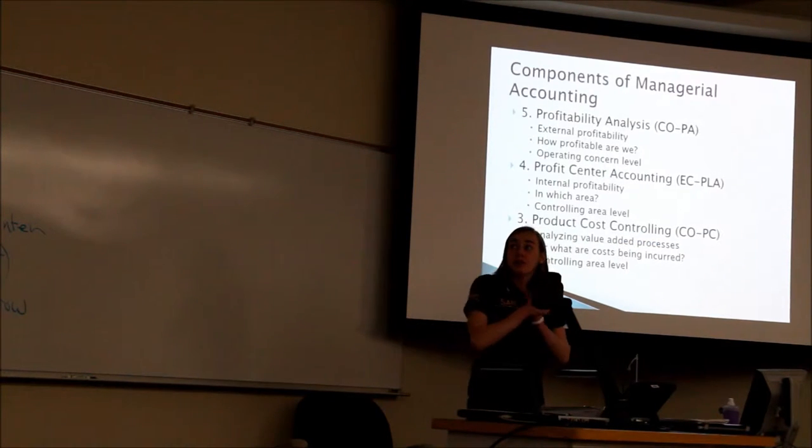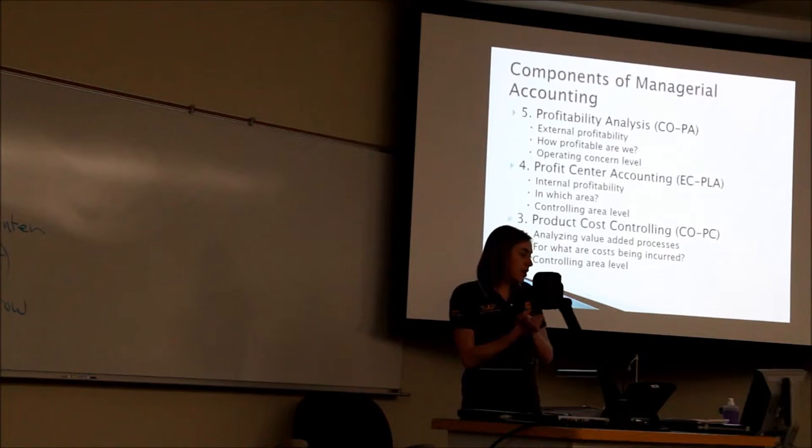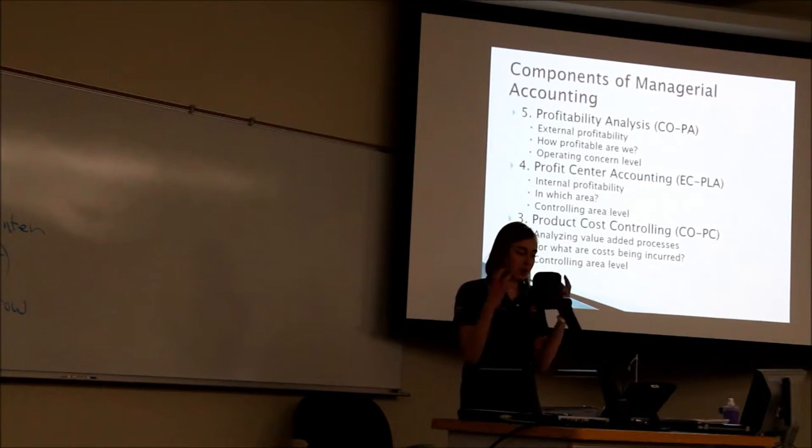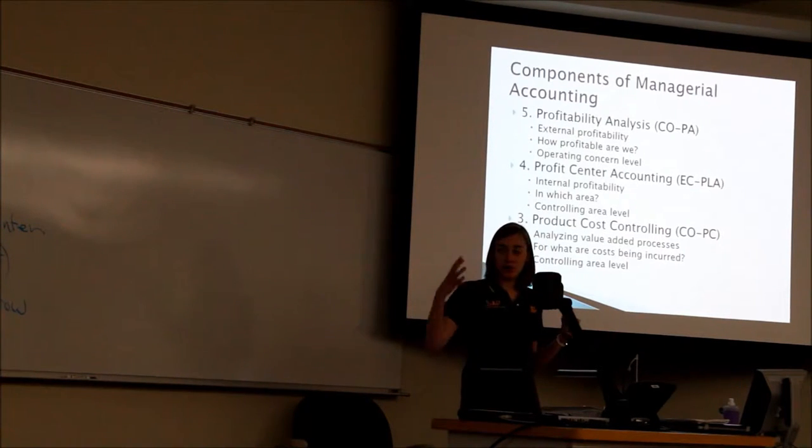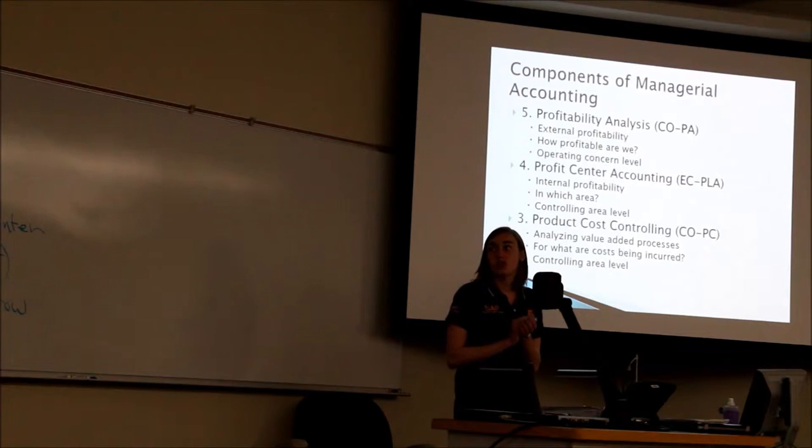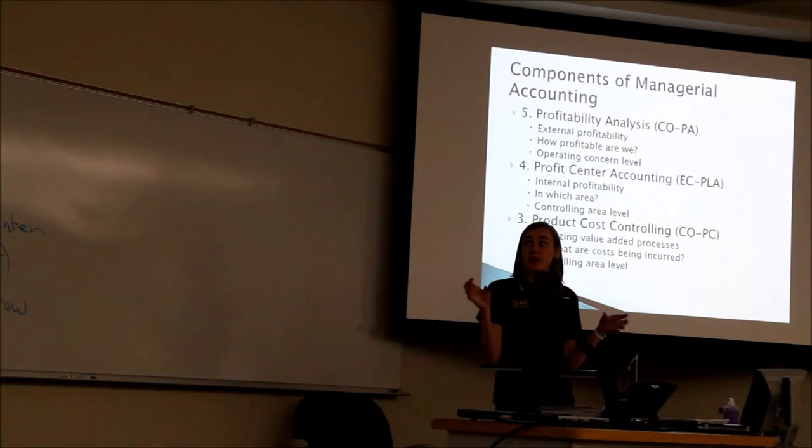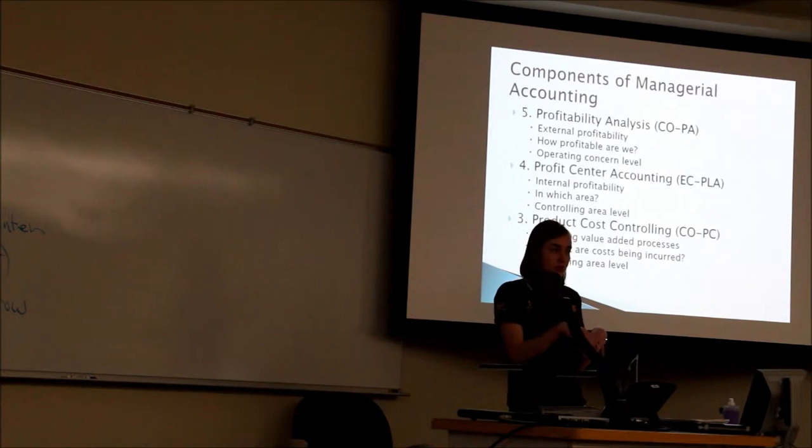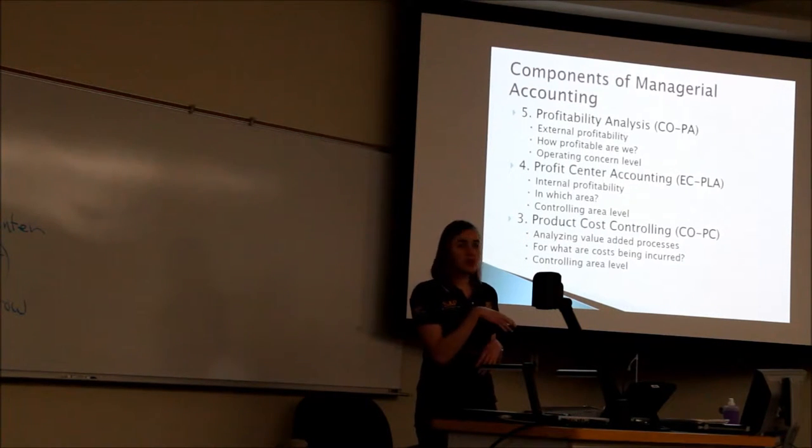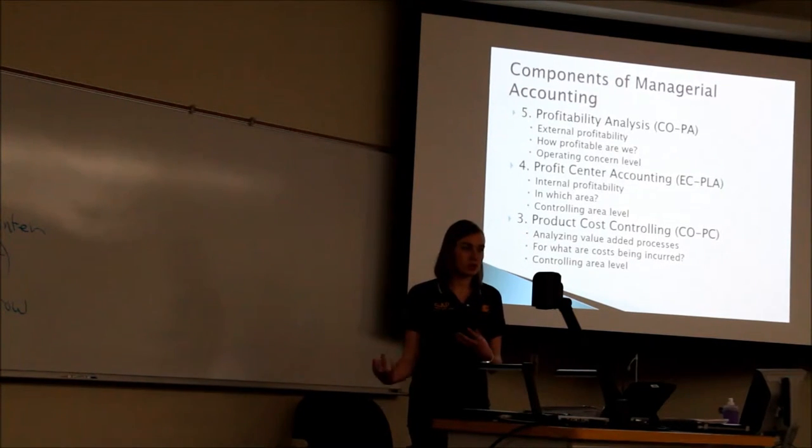So there are five components of managerial accounting. I like to look at it from the more broad focus, and then narrow it down to be more specific. Each one of these areas is associated with a certain organizational structure. We start off with profitability analysis, and this is the external profitability. This asks the question of how profitable are we actually? And this is concerned with that operating concern level that we were just talking about, that unique thing to controlling.